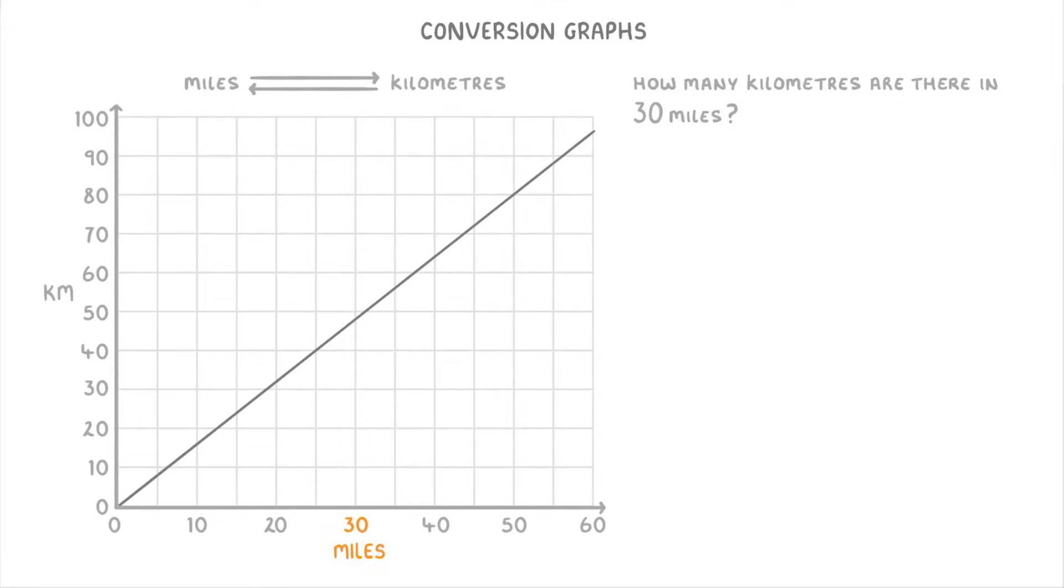Once we've done this, the next thing is to draw a vertical dashed line upwards until we hit our main line. And then we draw a dashed horizontal line across to our y-axis and see where it hits, which in this case is around 48 kilometers. So this tells us that 30 miles is equivalent to 48 kilometers.